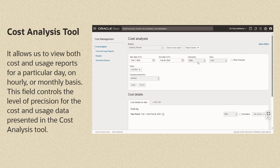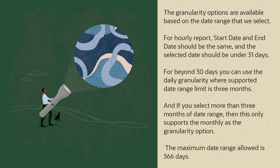This field controls the level of precision for the cost and usage data presented in the cost analysis tool. Let's get started. The granularity options are available based on the date range that we select. For an hourly report, the start date and end date should be the same, and the selected date should be under 31 days.